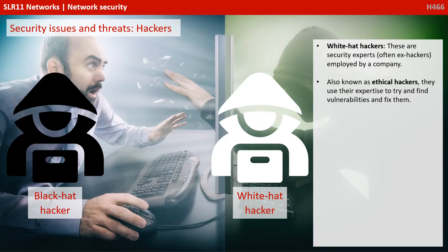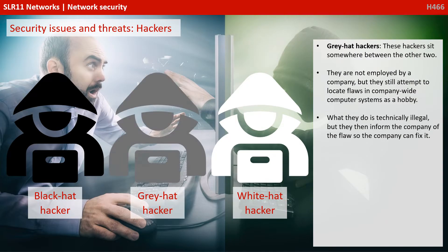At the other end of the spectrum we have white hat hackers. These are security experts, sometimes ex-hackers, employed by a company. Also known as ethical hackers, they use their expertise to try and find vulnerabilities and fix them. Grey hat hackers sit somewhere between the two. They're not officially employed by a company, but they still attempt to locate flaws in company-wide computer systems, sometimes nothing more than a hobby. What they do is technically illegal — it's still hacking — but they tend to inform the company of the flaw so they can fix it.